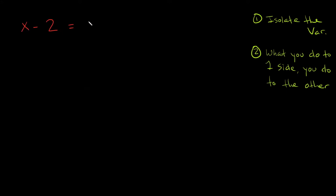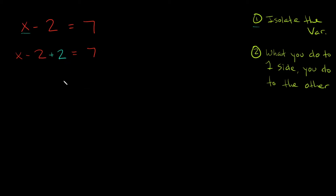x minus 2 is equal to 7. I'm going to follow my two-step process. Step one: isolate the variable. This variable right here — I don't want anything next to it, I want it to be completely by itself. So I need to find a way to get rid of this minus 2. I'll rewrite the problem to give me a little space. How am I going to get rid of this minus 2? I could add 2, because minus 2 plus 2 — that's going to cancel each other out.